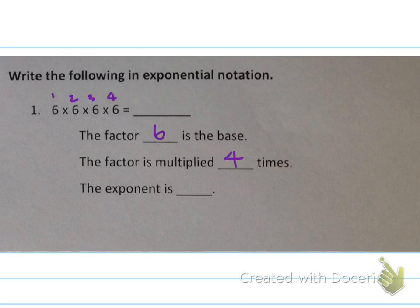So we're going to put a 4 here. That means the exponent is 4. So if we're writing this in exponential notation, our base is 6 and 4 is the exponent. So we have 6 to the 4th power.